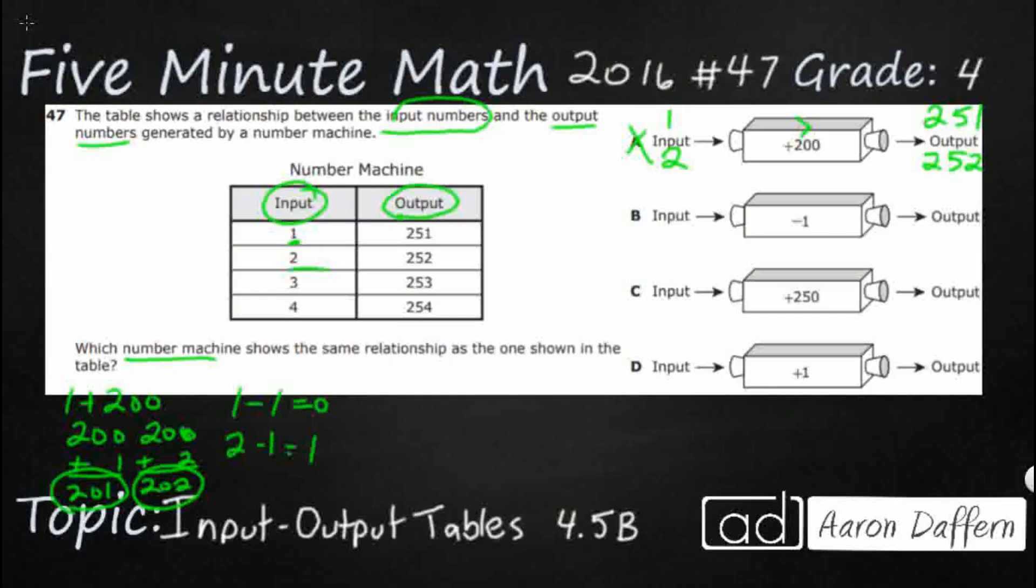But you know what they did here is they actually flipped this. So, this is why they put this as an incorrect answer choice. Let's take a look at our output. What if we put our output out here, 251?